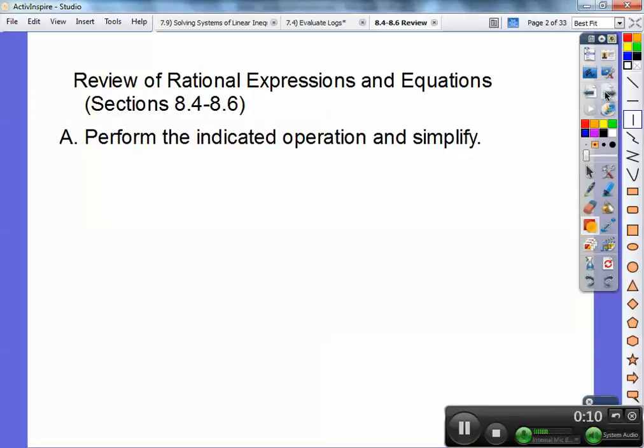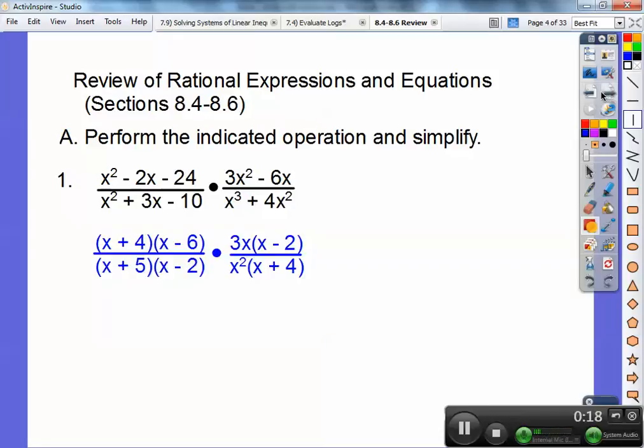Okay, so perform the indicated operation and simplify. Here we're multiplying two rational fractions. I'm going to factor each one. Factors of negative 24 that add to negative 2 are positive 4 times a negative 6.